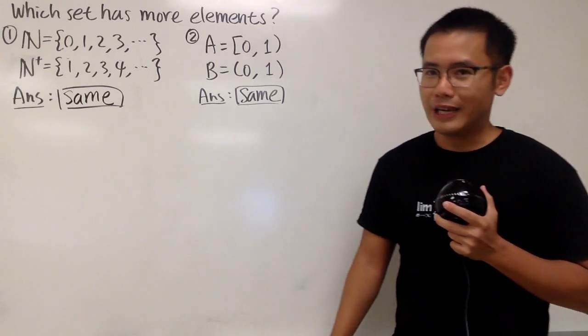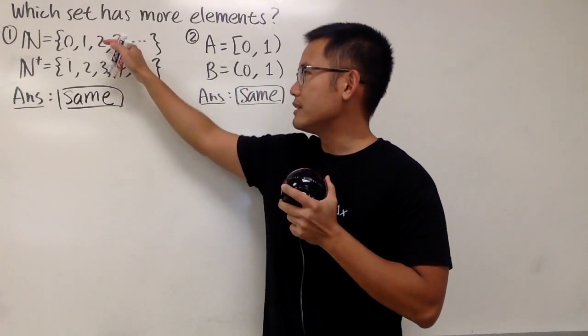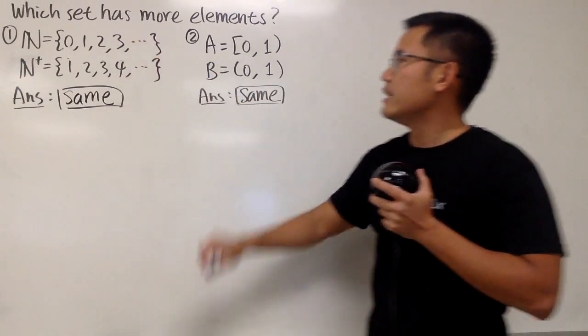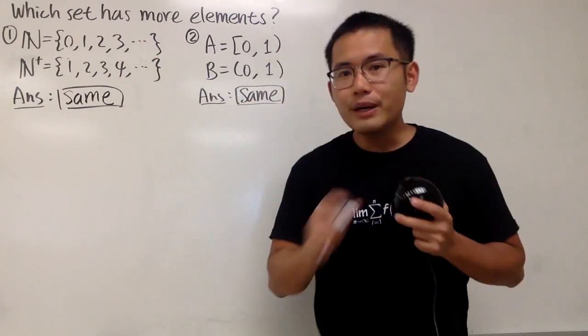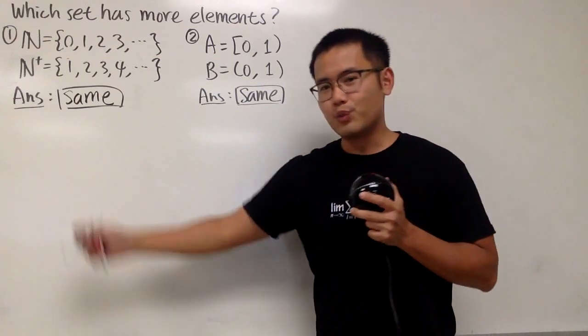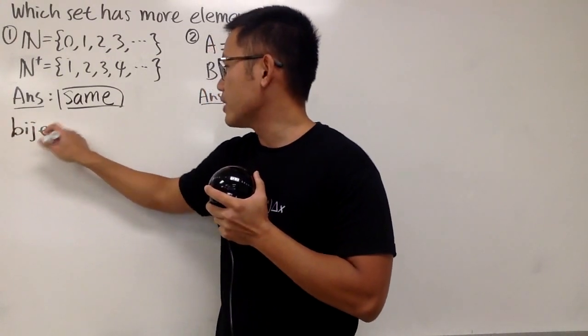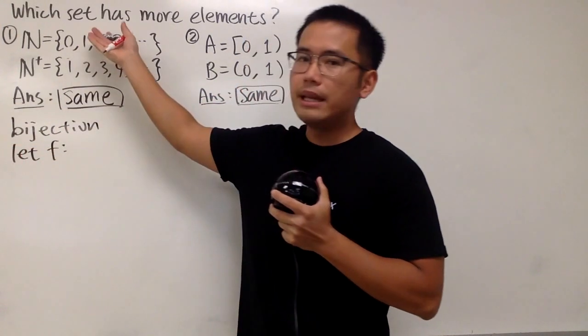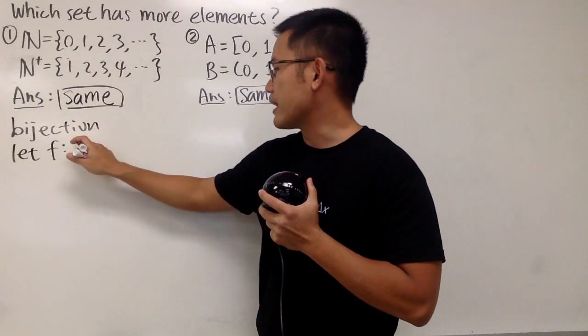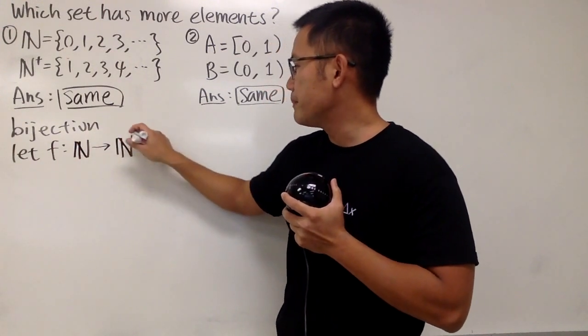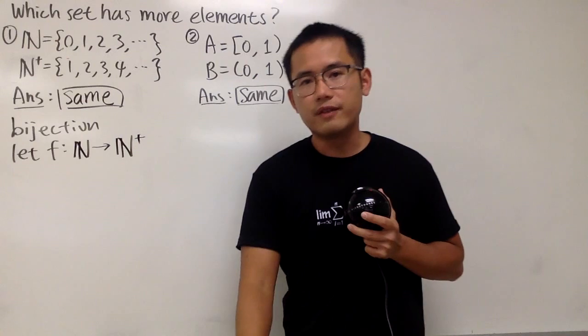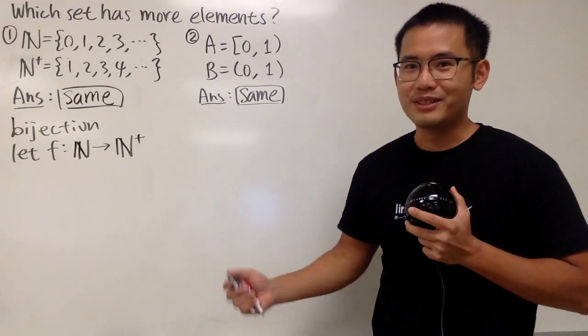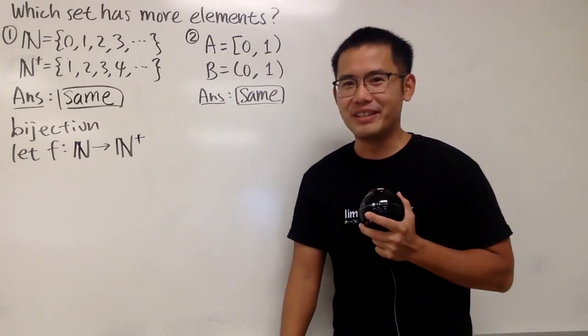Now, the real challenge is can we find a bijection from this set to that set? And likewise, we have to do the same so that we can show that these two sets and these two sets, they have the same number of elements. Let's talk about the first one right here. Again, we need a bijection to go from one set to the other, and let me just call the bijection to be f, and let me just go from the first set to the second. N to N plus - that's just the set of all the positive natural numbers, and I'm using zero as a natural number, just a confession, because I'm the creator of this video.